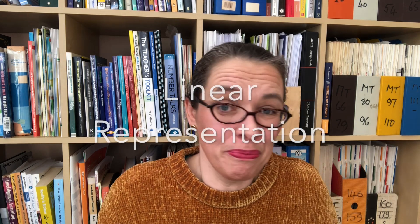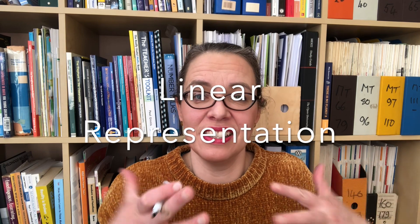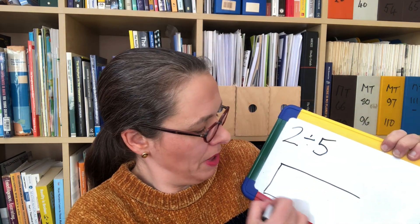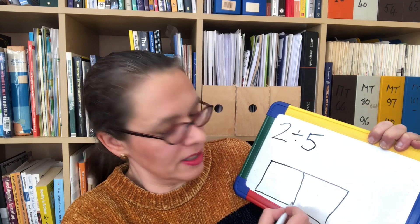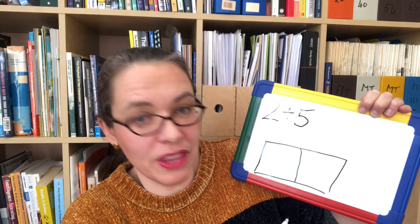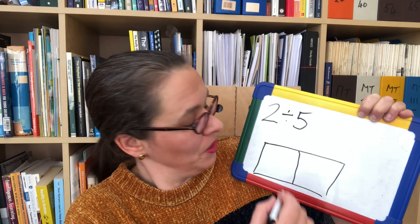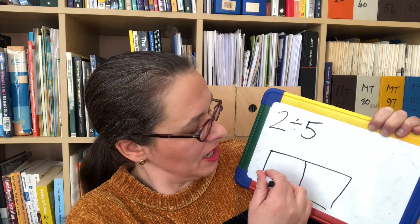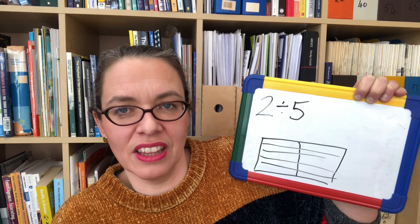Now let's look at this with a linear representation of fractions, because it's great for children to see maths in two ways. Somehow when they do that, it goes a level deeper into their understanding when they make connections between the two different representations. Our first question was two divided by five. Let's draw a bar that's two units long — that's the two we're starting with — and we want to divide it by five. We could split each one into five and take one from each section.